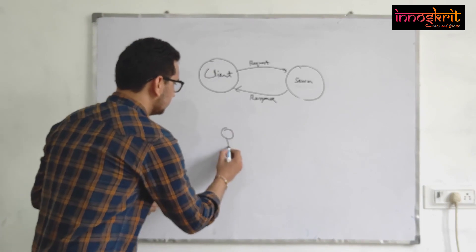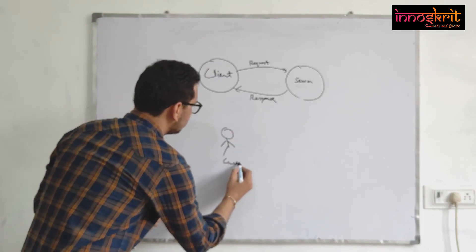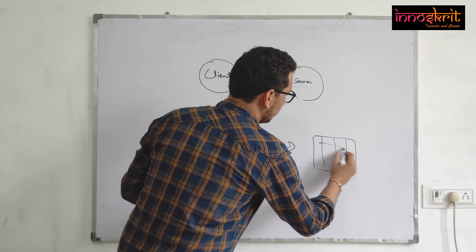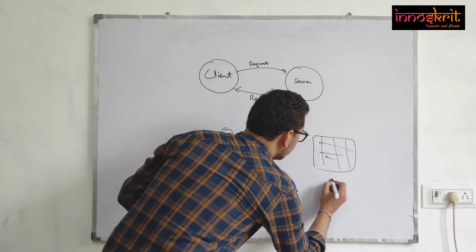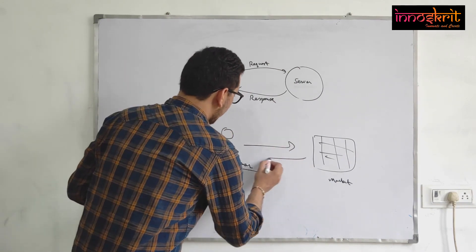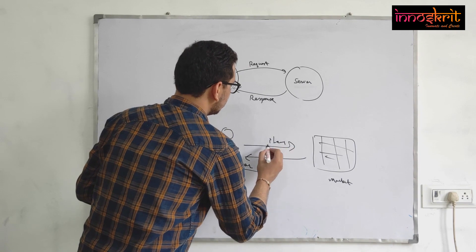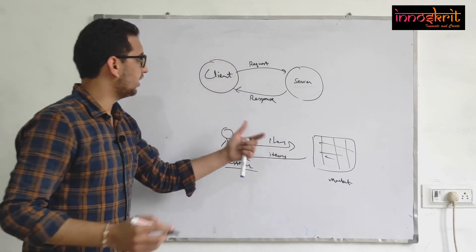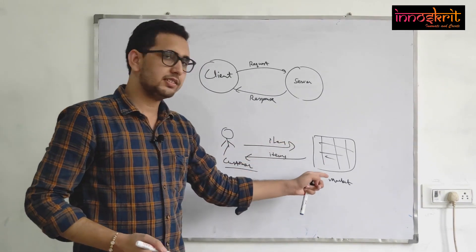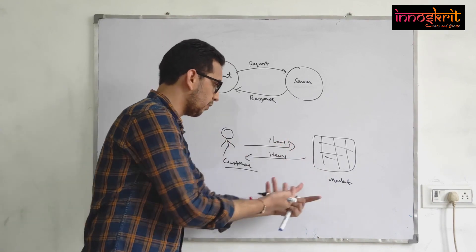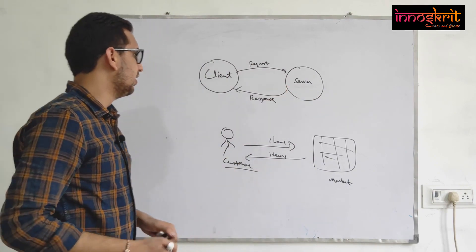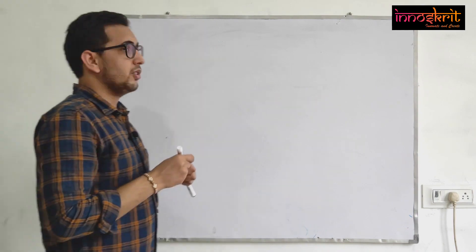For example, if you are a customer and you want to go to the market, you are the client and the market is the server. The customer goes to the market to purchase some items and comes back with those items. So the customer is the client, the market is the server — it has the things you want — and the client asks for the data while the server returns the response.